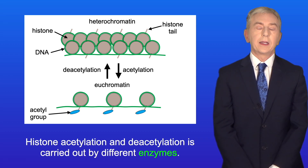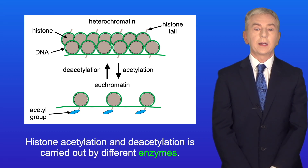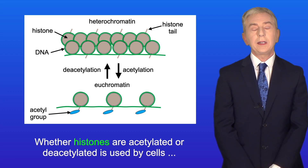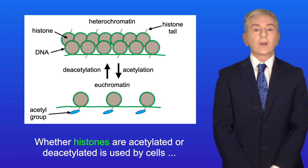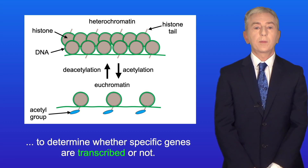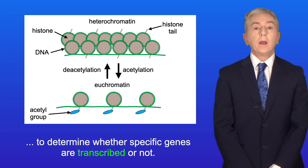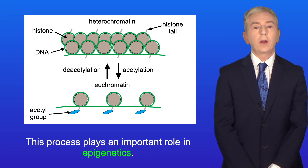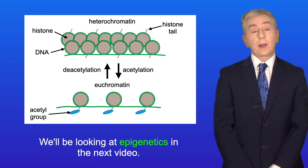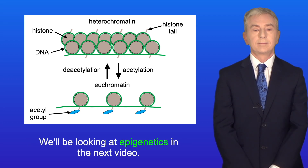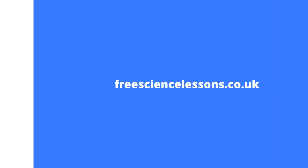Histone acetylation and deacetylation is carried out by different enzymes, and whether histones are acetylated or deacetylated is used by cells to determine whether specific genes are transcribed or not. This process plays an important role in epigenetics, which we'll be looking at in the next video.